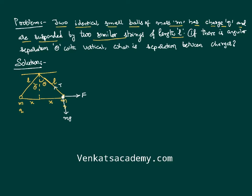Now I need to calculate the angular separation theta. If we extend the string line, that angle is also theta. So we can resolve the tension into components: the vertical component becomes T cos theta and the horizontal component becomes T sin theta. At equilibrium, T sin theta equals F and T cos theta equals mg.